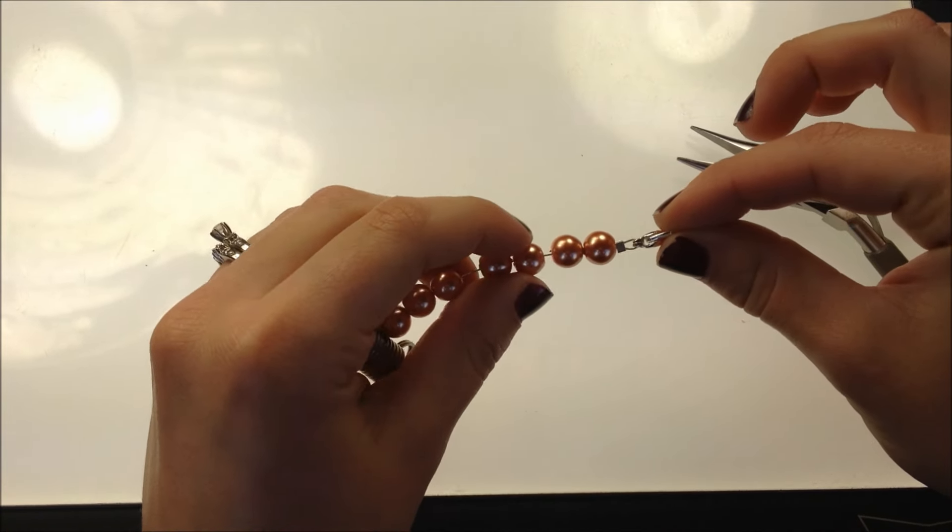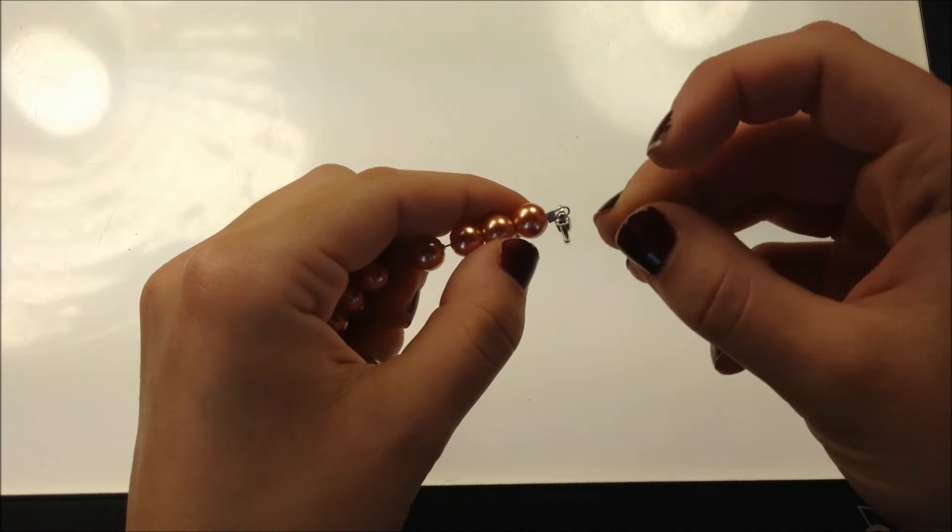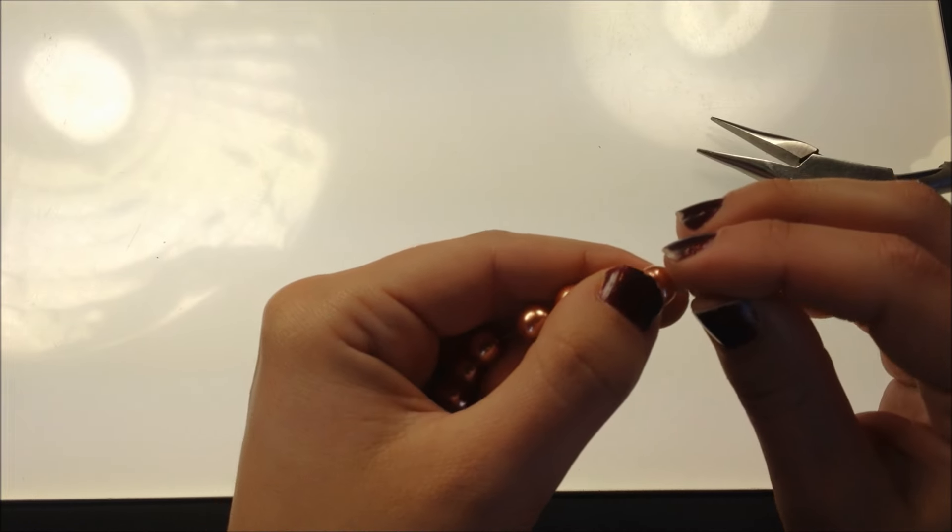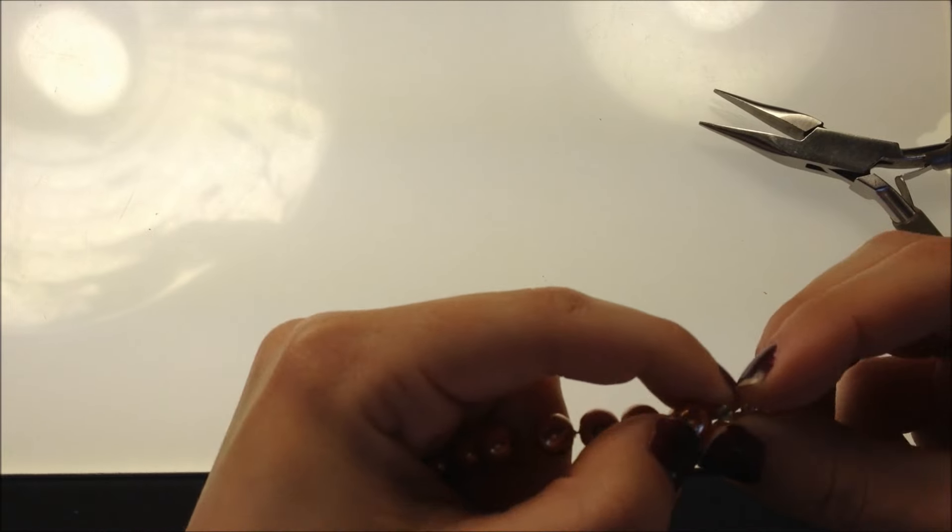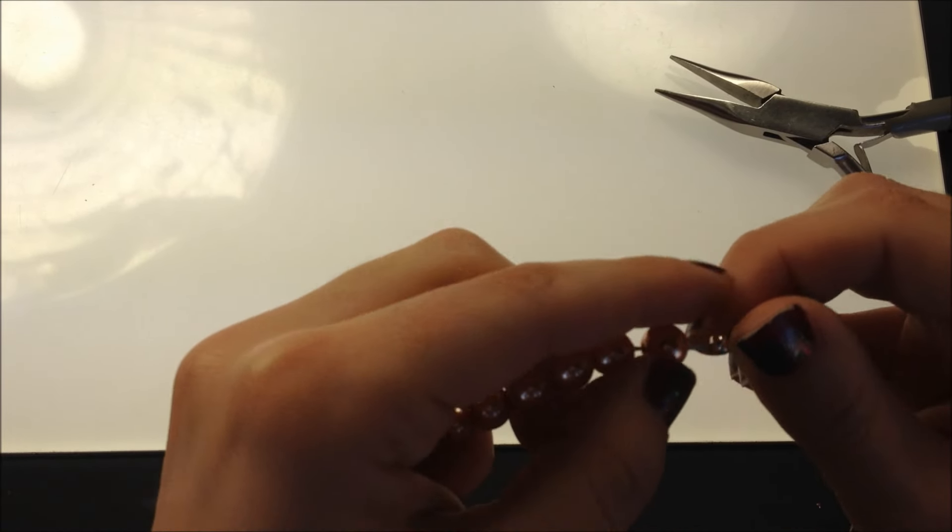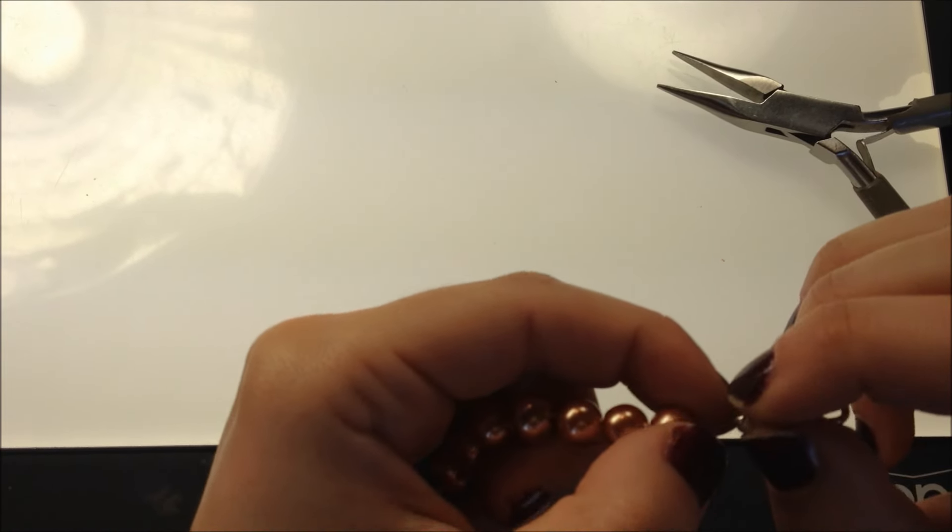That's the basic flat crimp. If you'd like to use a crimp cover, you'll take that and place it over top of your crimp bead. The crimp covers come in multiple finishes: gunmetal, copper, gold. We also have them in sterling and gold filled.